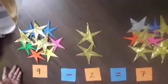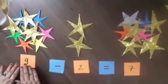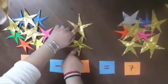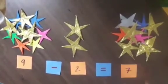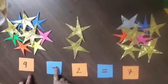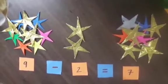So children, what did you understand? We had 9 stars, from which we took 2 stars, then we are left with 7 stars. 9 minus 2 equals to 7.